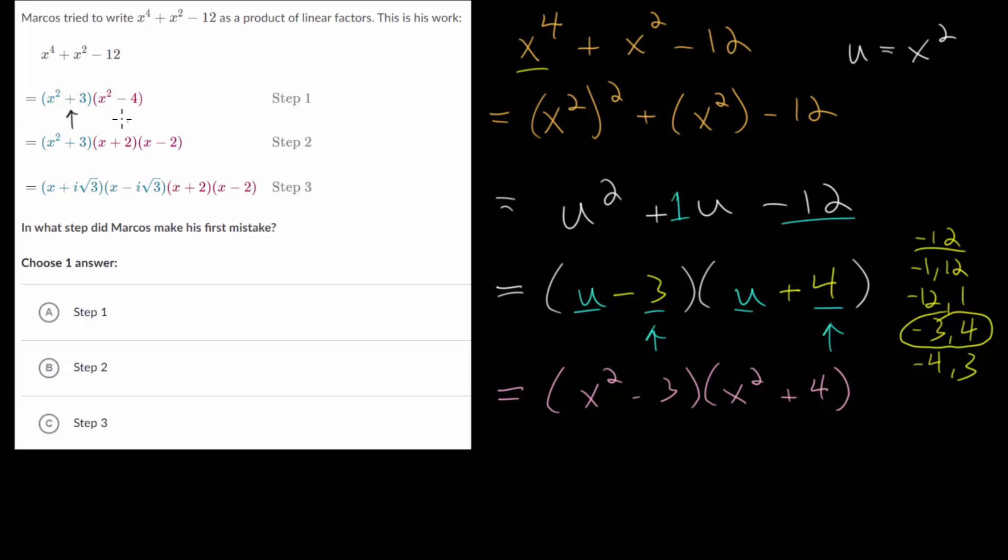In fact, notice that compared to our work, the signs are switched here. We had x squared minus 3 and x squared plus 4. An alternate strategy, rather than working it out yourself, is that at each stage, you can just re-multiply this back out and make sure that you get back the original expression.